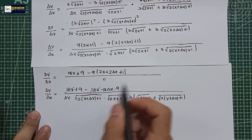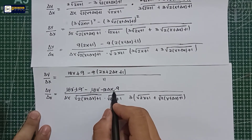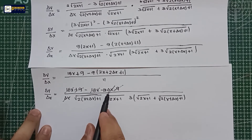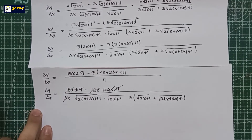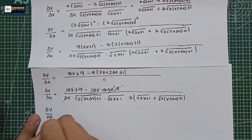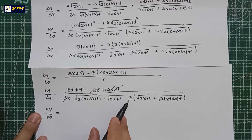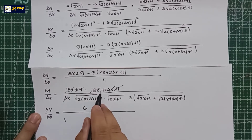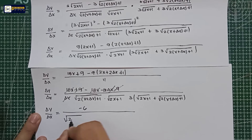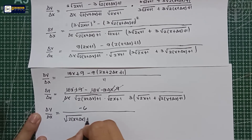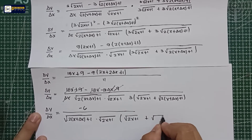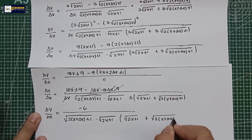Cancel out the 18x, cancel out also the positive 9 and negative 9 — those go to zero. What remains in the numerator is negative 18 delta x. Since we have a delta x in the numerator, we can cancel it with the delta x in the denominator. So delta y over delta x is equal to negative 18 divided by 3, which is negative 6, all over by the square root of (2x plus delta x plus 1) times the square root of (2x plus 1) times the square root of (2x plus 1) plus the square root of (2x plus delta x plus 1).